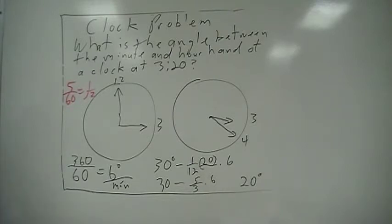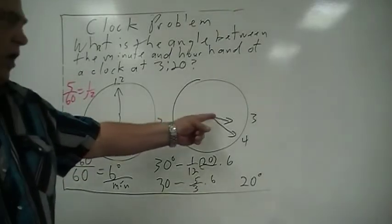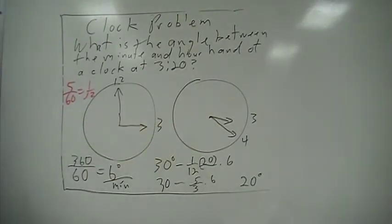So 30 minus 10 means it should be 20 degrees between the hour hand and the minute hand at 3:20.